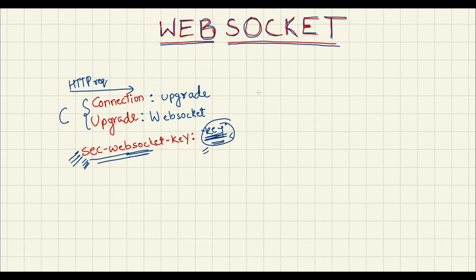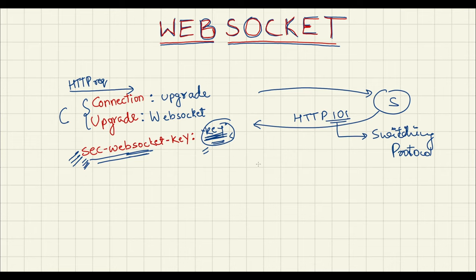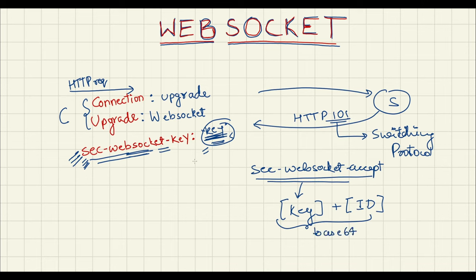Once the client request containing all these headers lands on the server, the server sends back the response — HTTP 101. This indicates that the server is ready to switch the protocol from HTTP to WebSocket. The server includes a response header called Sec-WebSocket-Accept, which contains the key from the Sec-WebSocket-Key request header, appended with a server-specific ID and encoded using base64. Once the client receives this response, the WebSocket connection is established and the server can stream data to the client.